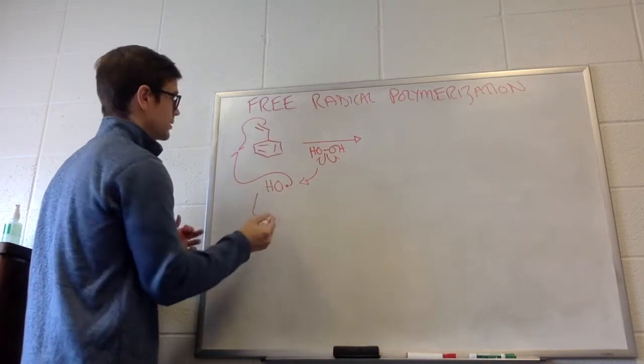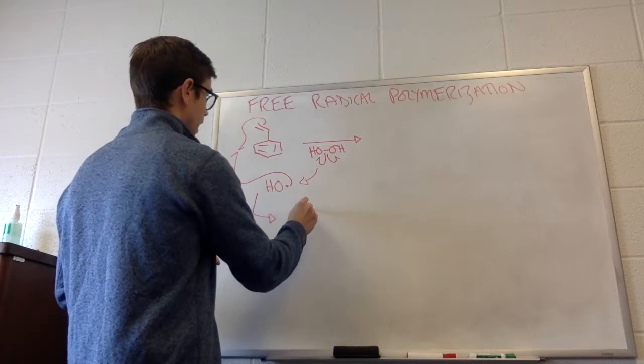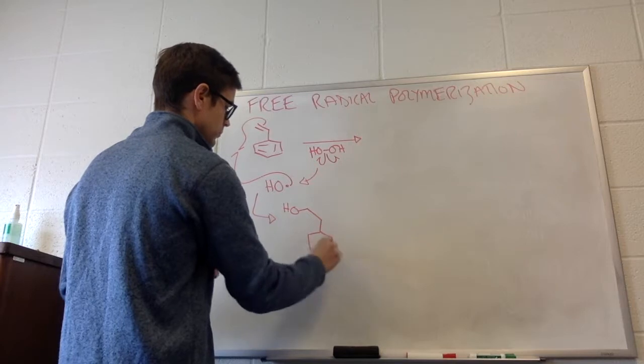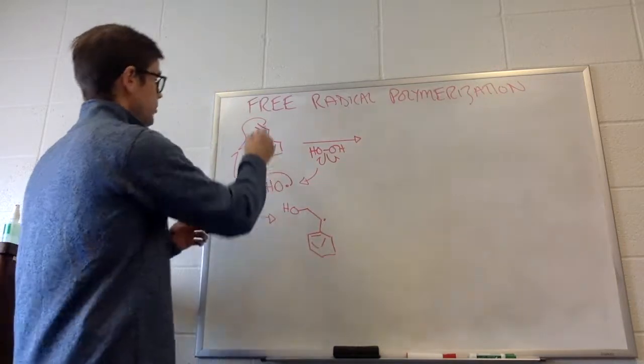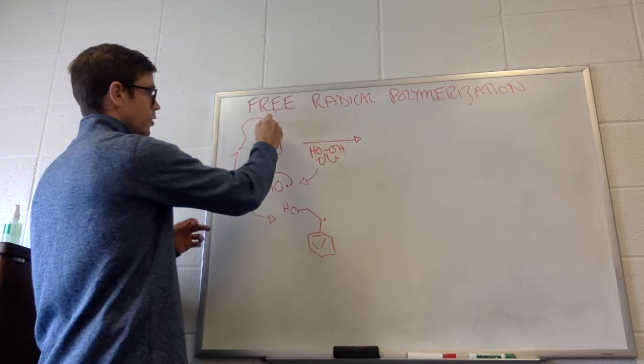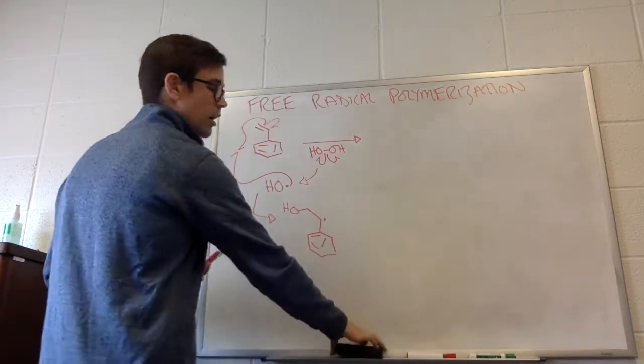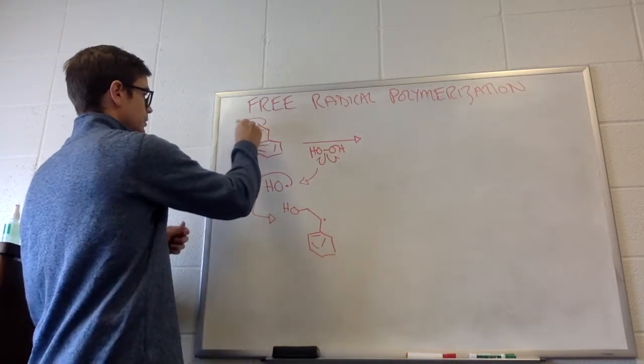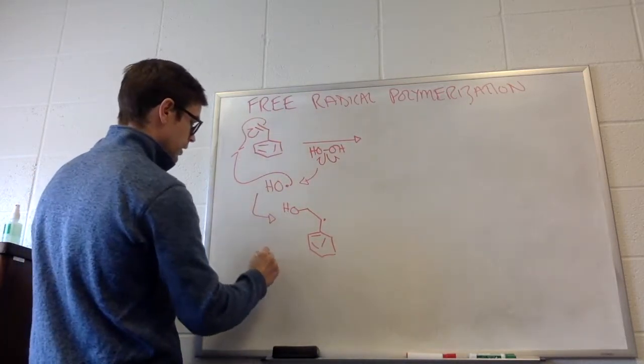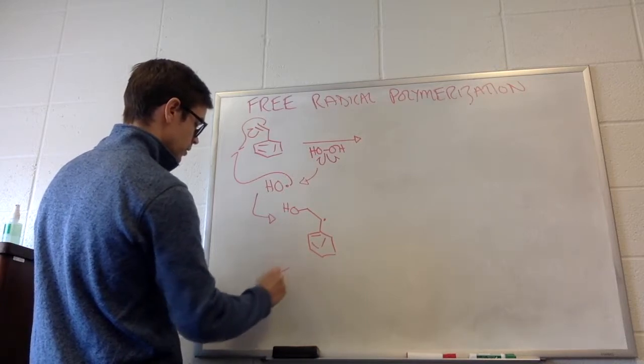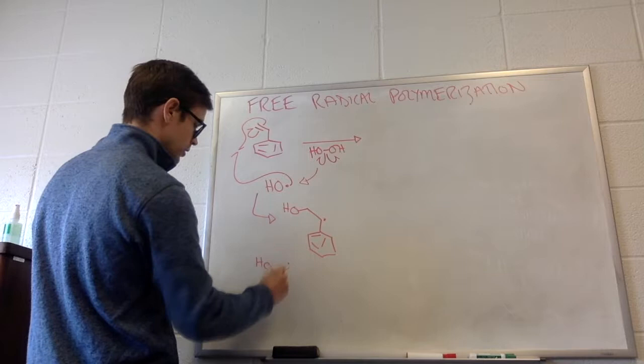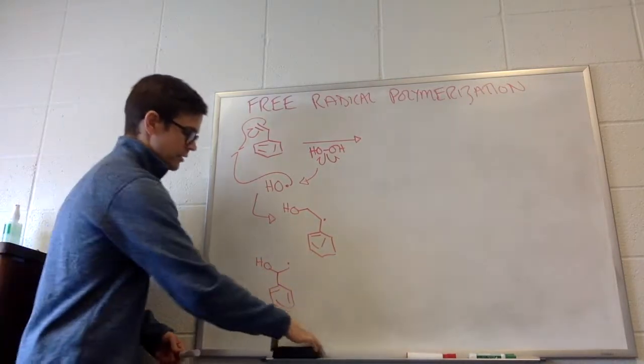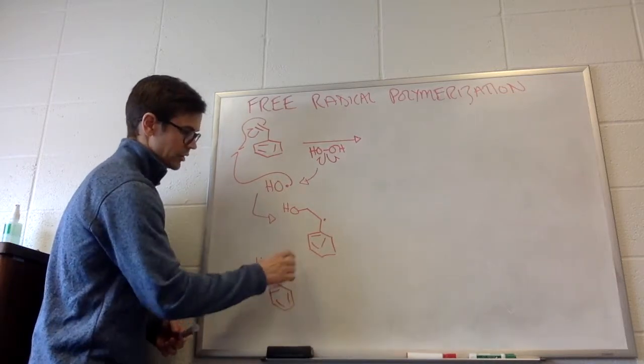So let's draw both options out. We either could have the OH added here with the radical there. So that would be if we drew the hooked arrow to go like that. Or if we drew the hooked arrow to go to the other side like this, it would be this structure here.